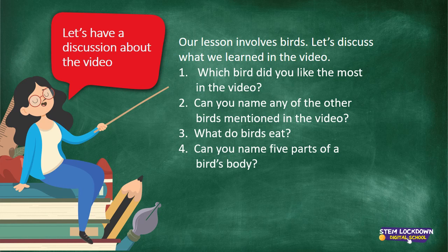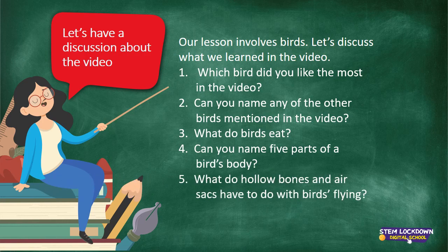Can you name five parts of a bird's body after seeing that video? A bill and beak, legs, wings, cover feathers. I didn't realize that birds have four types of feathers — wing feathers, tail, and even a breast, that part of the front that's often colorful. What do hollow bones and air sacs have to do with birds flying? Their hollow bones make them very light so they can fly much easier, and they have lungs connected to air sacs that give them a lot of air while flying.